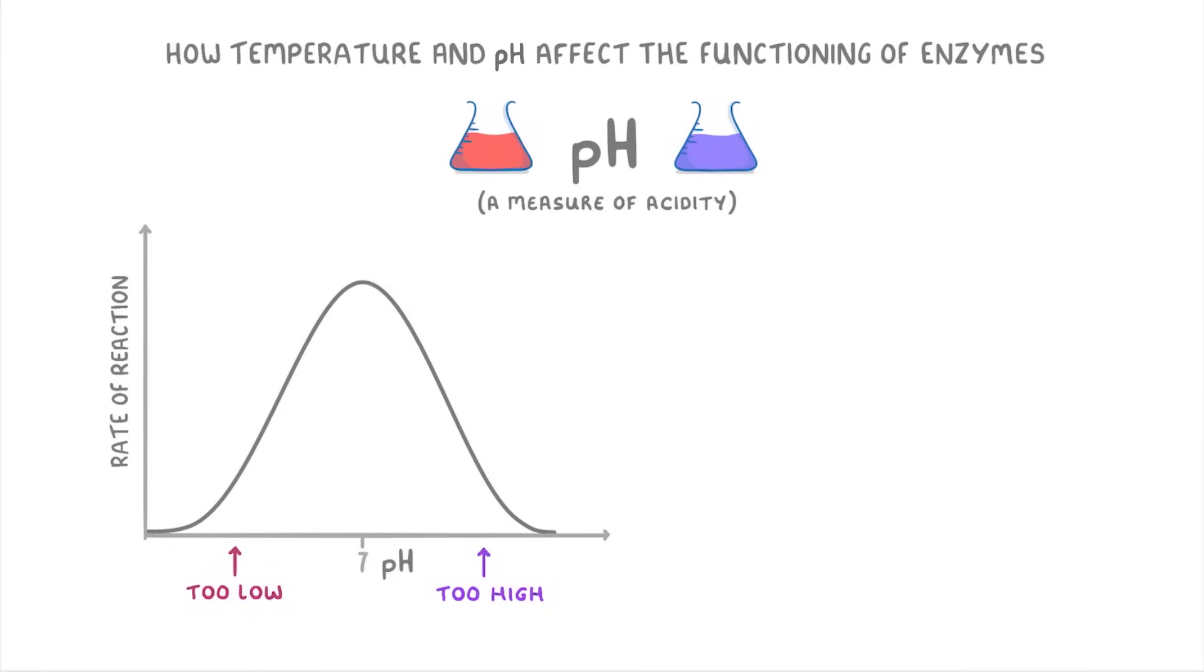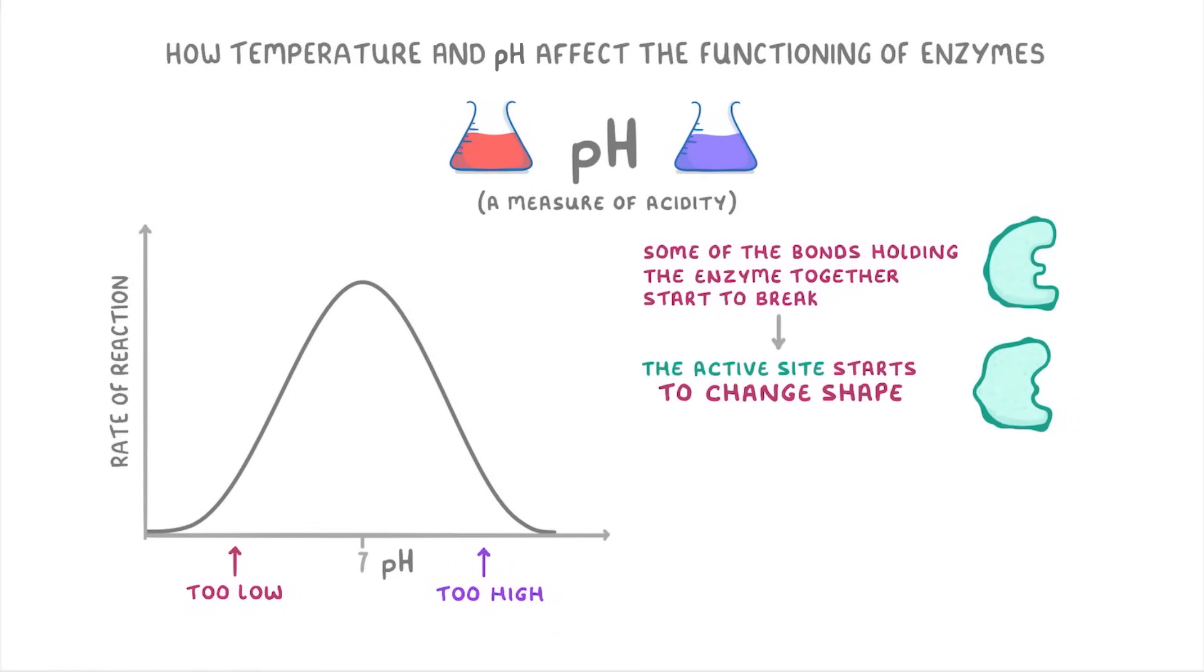Just like with high temperatures, this is because some of the bonds holding the enzyme together start to break, and so the active site starts to change shape. At first, it just changes a bit, so the substrate can still fit, but less well than normal. This slows down the rate of reaction, but doesn't completely stop it.